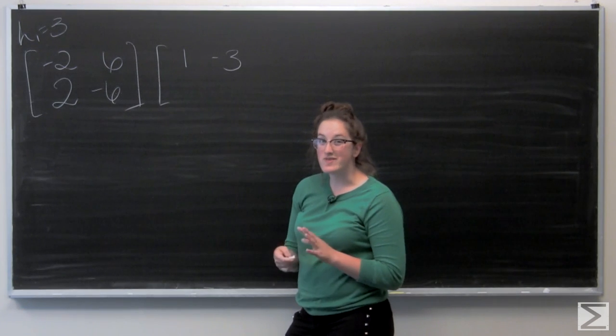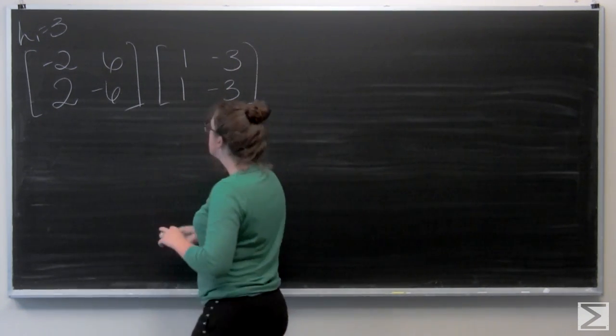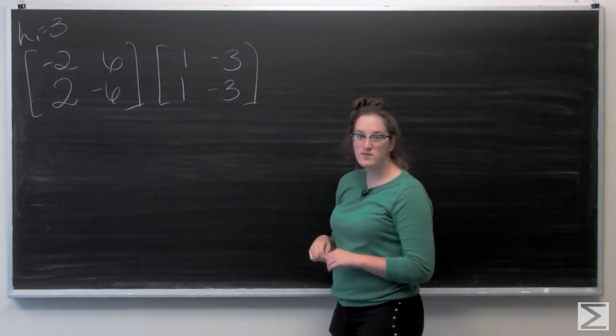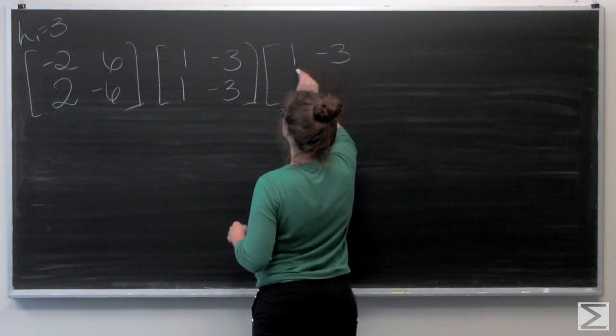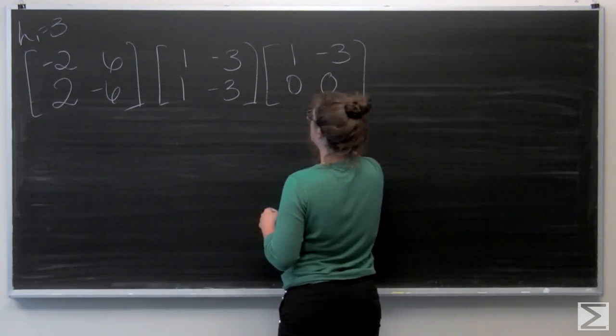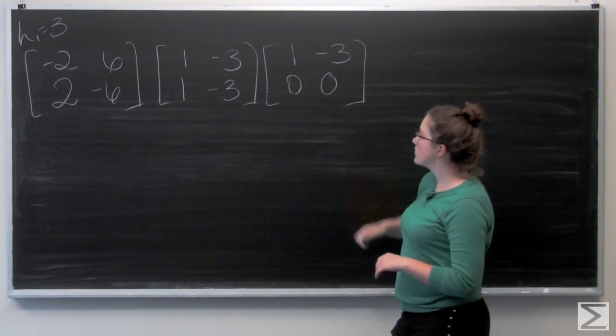And I'm going to reduce the top row by a factor of negative 2 to get 1, negative 3. And the bottom row, I'm just going to divide everything by 2. And then obviously the two rows are the same, so I'm going to subtract the first row from the second. It leaves me 1, negative 3, 0, 0. Since the bottom row is all 0's, I know that my x2 is going to be a free variable. I'm going to call it t.